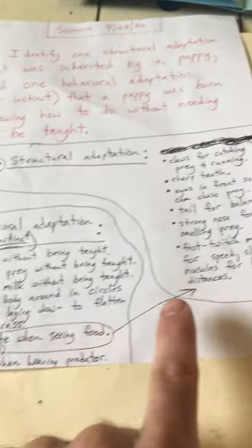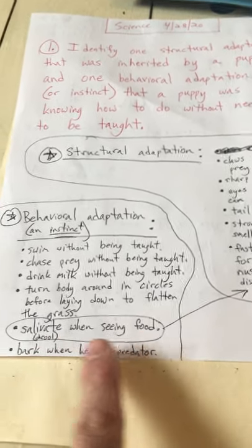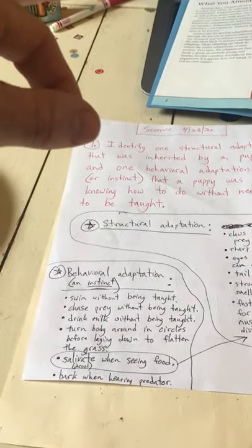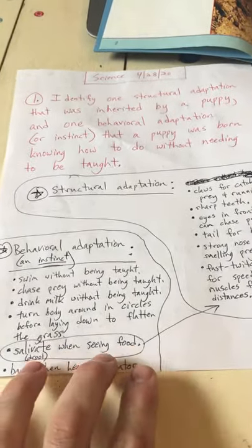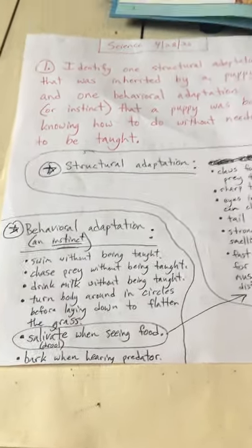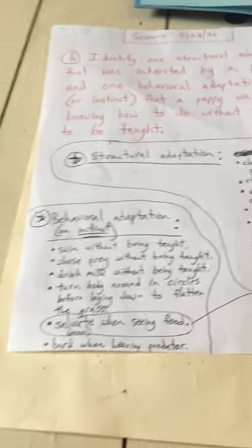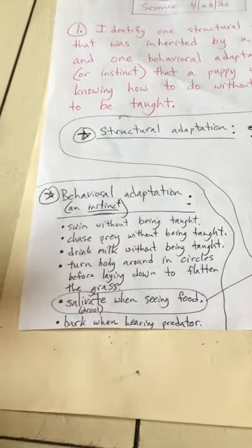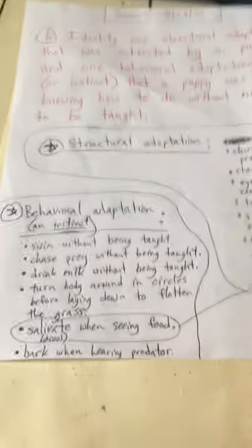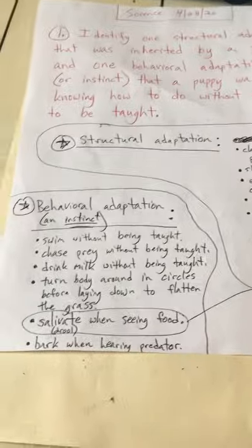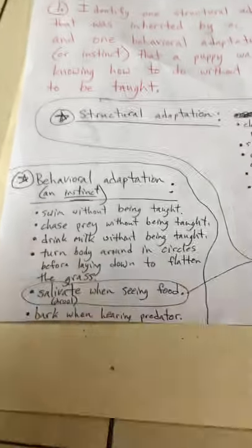Dogs salivate when they see food — salivate means to drool. If you held a piece of steak up in front of a puppy, it would start to drool without being taught. That is actually part of its body reacting in a certain way, so I moved it to structural adaptations. The last one is that they bark when they hear a predator — that's a behavior they were born knowing to do. Nobody has to teach them to bark when someone comes to the door. That's an instinct, a behavioral adaptation that has allowed dogs to survive.